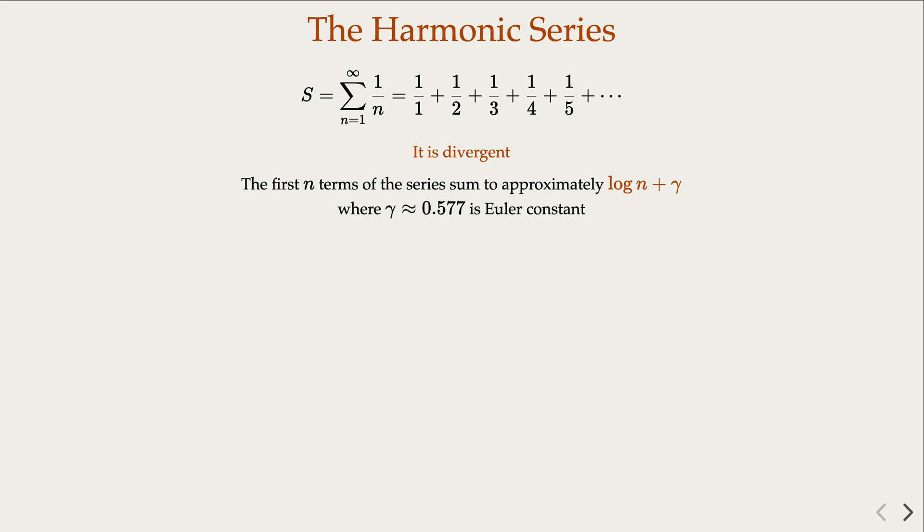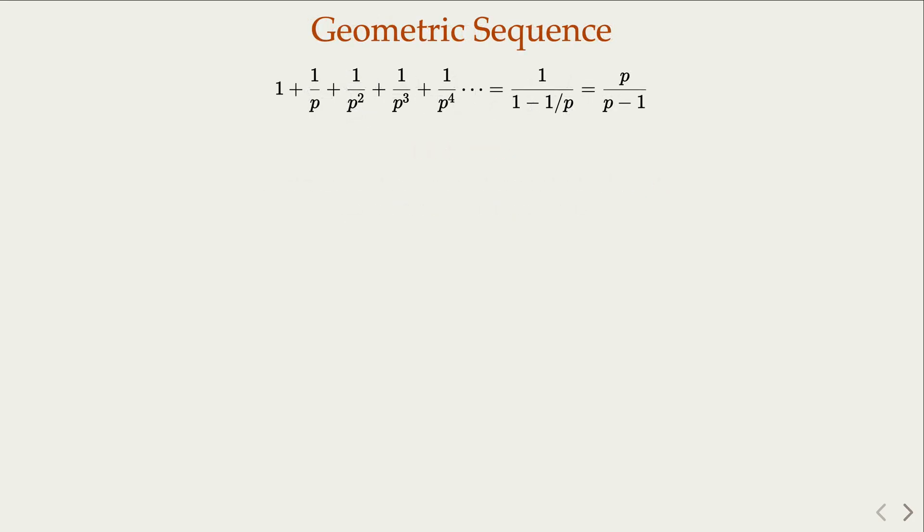We're not going into details here, but let's see how Euler made the proof. First of all, let's review the geometric sequence. Here, the infinite sequence, the ratio is 1 over p, where p is a prime number.